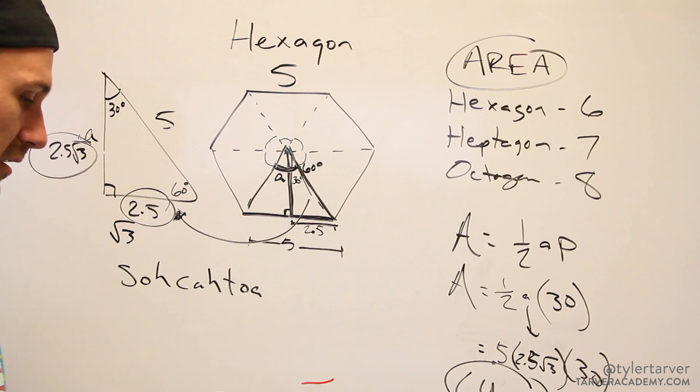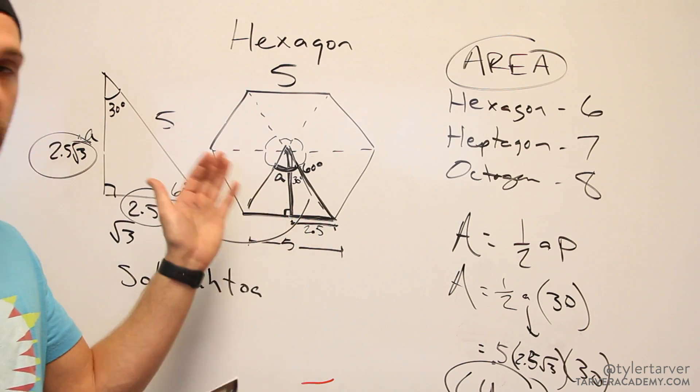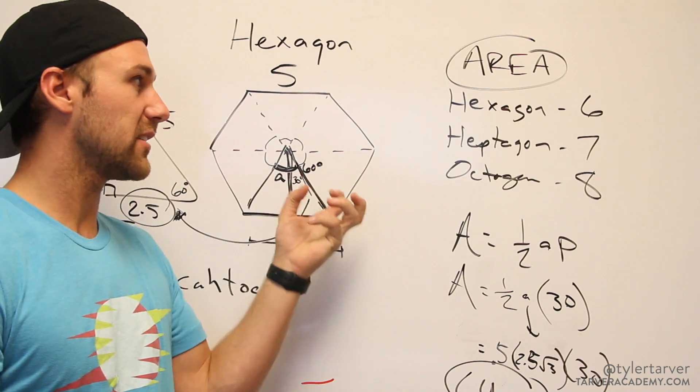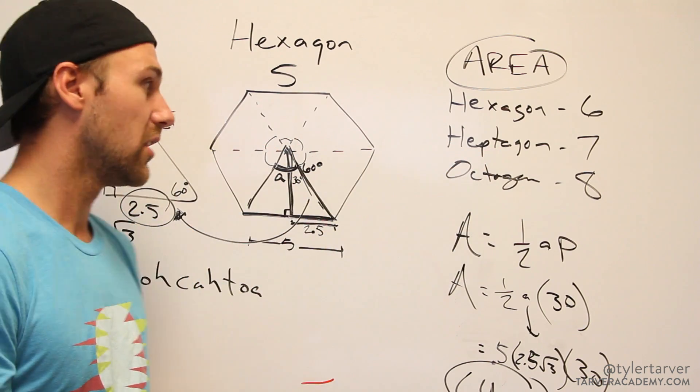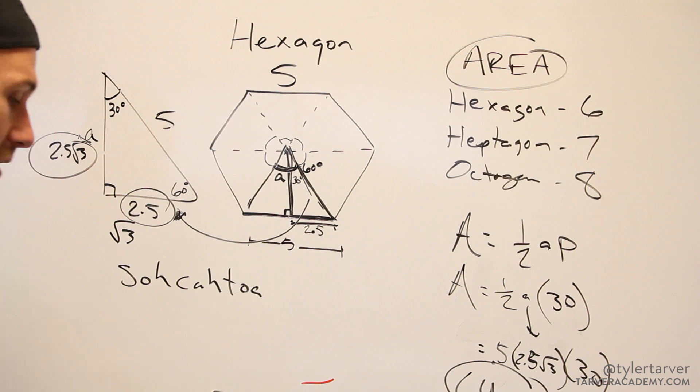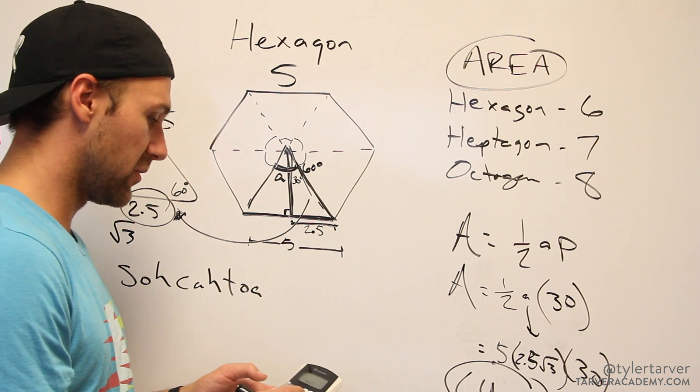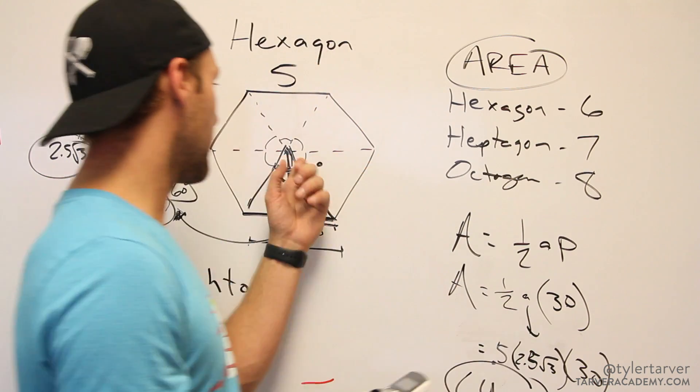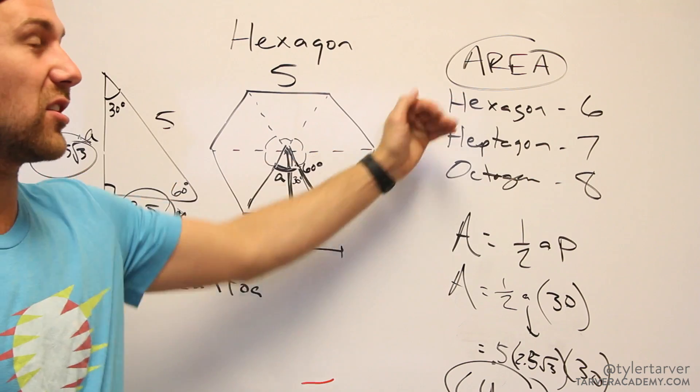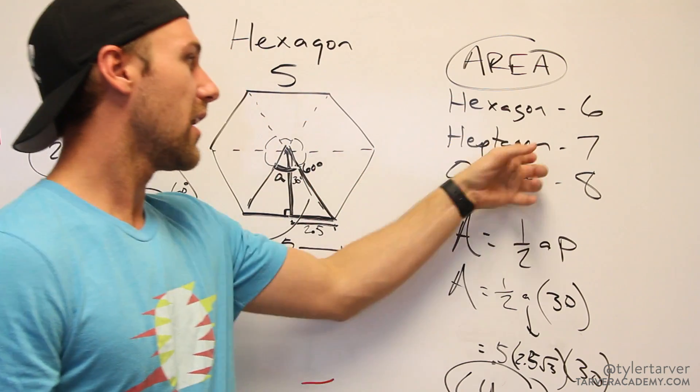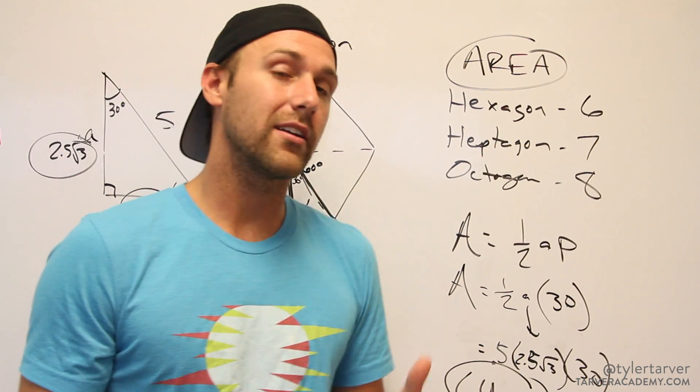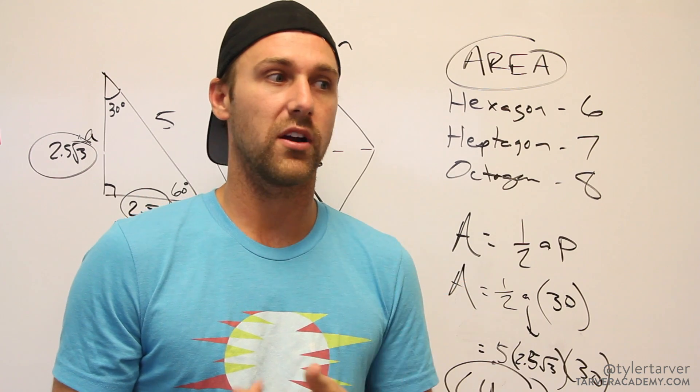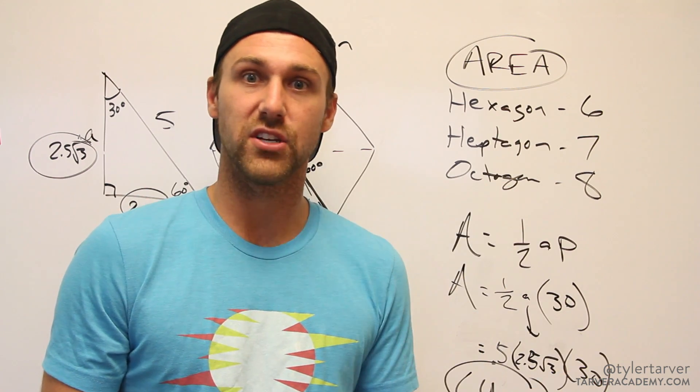For heptagon it's gonna be 360 divided by 7, and I cheated - it's around 51 point something. So that's not as pretty but it's what you've got to use. And then for octagon you just do 360 divided by 8, which is 45 degrees in there. So octagon and hexagon are easier because you get a cleaner angle. Heptagon is a little different. I wouldn't make it a decimal, I would make it something like a fraction, so it'd be like 360 over 7. That's gonna be your best bet.